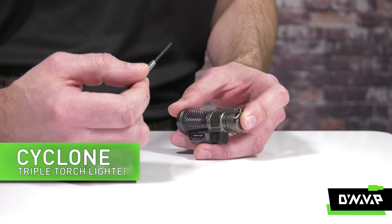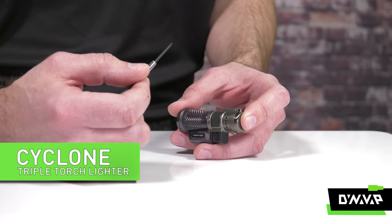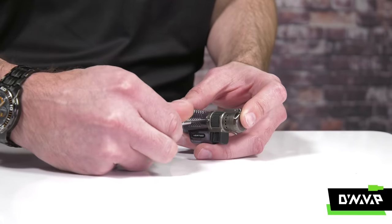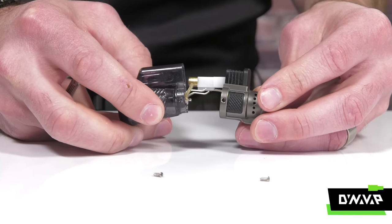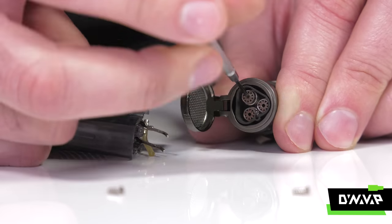Now, let's take each lighter apart and see how they work, beginning with the Cyclone. We're now going to disassemble the Cyclone, look at its components, how everything works, and how to fine tune the performance of this lighter to make sure that it works the way that you want it to.